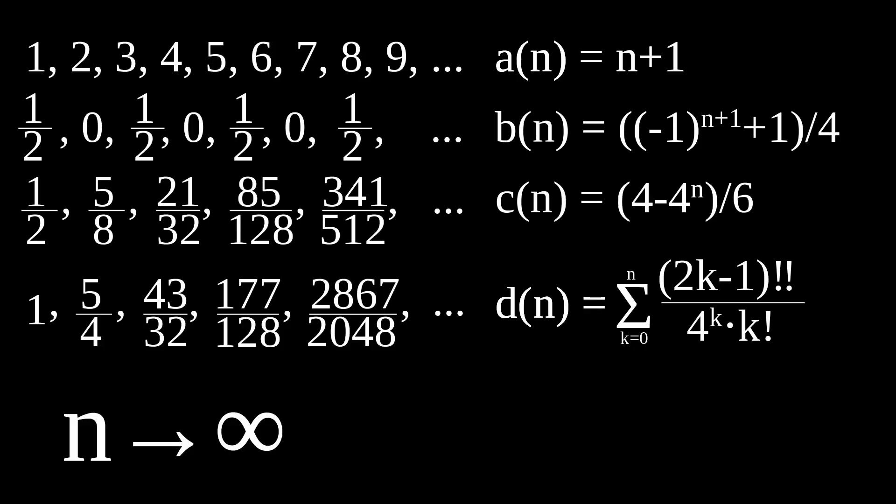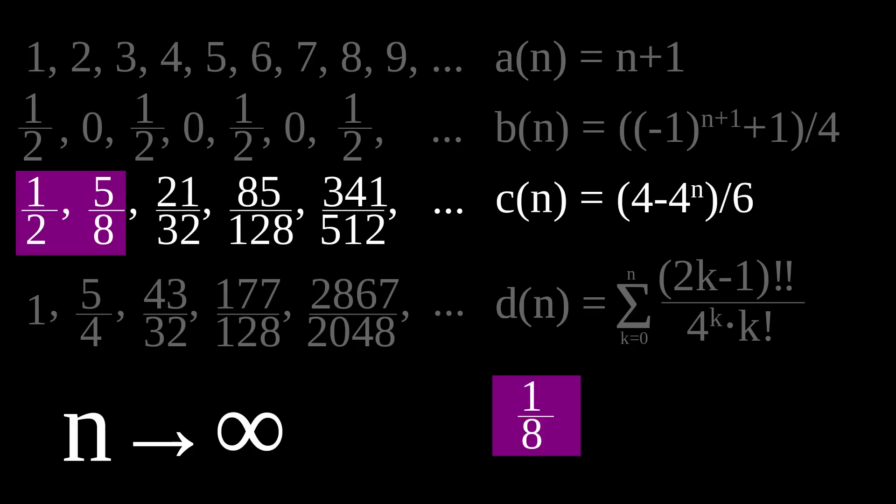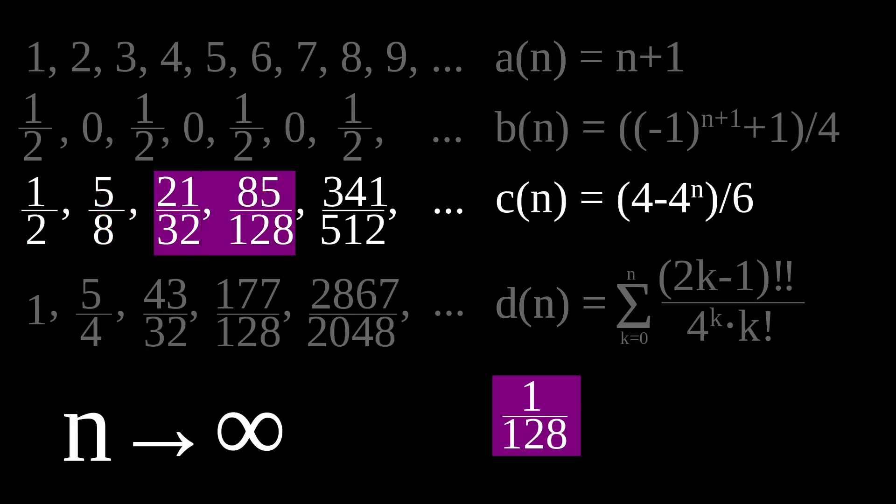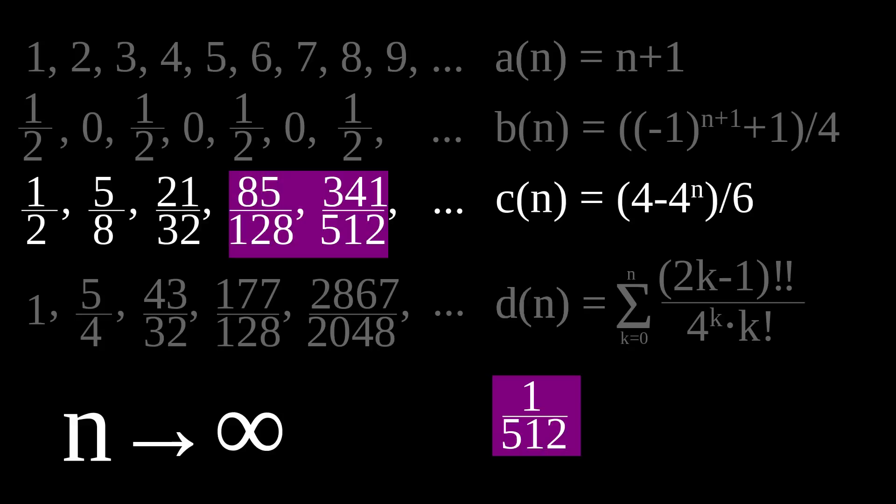The first two series definitely don't—a just explodes to infinity and b just oscillates between two values indefinitely. With c, however, if we look at the distances between two consecutive values, you can see that they become smaller and smaller. And what about d? How do we define these things exactly?